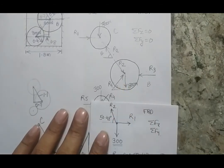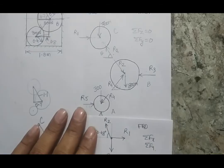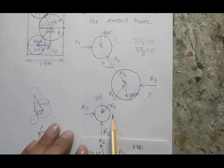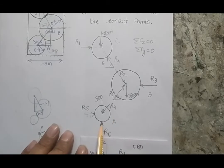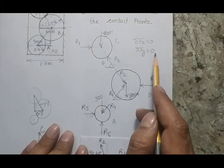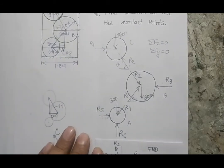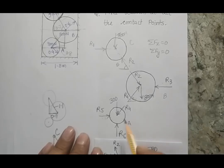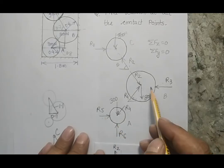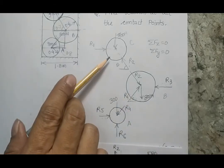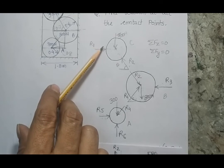You may wonder which free body diagram to start from. Keep in mind that for each free body diagram you can write only two equations, so you can solve a maximum of two unknowns. Starting from cylinder B gives three unknowns (R4, R2, R3); starting from cylinder A gives three unknowns (R5, R4, R6). Only cylinder C has just two unknowns, so start there — which we did.